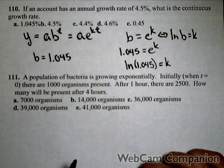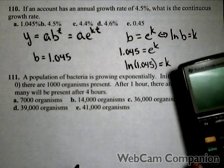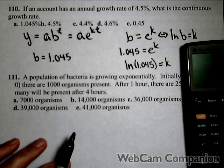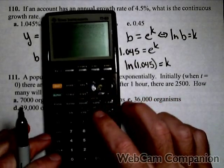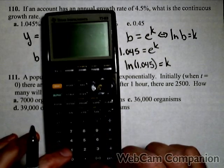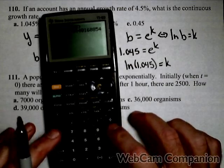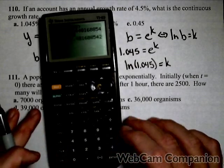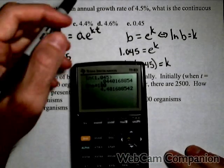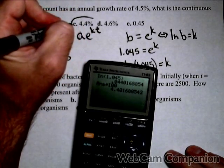So to get your continuous growth rate, you just need to take the natural log of the base of your exponential function. And then it's just a matter of putting it in the calculator. So ln of 1.045, and we turn it into a percent by multiplying by 100. And so the continuous growth rate would be 4.4%.